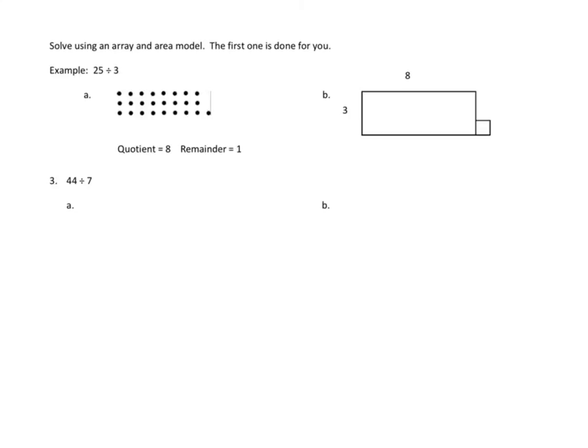In this one, we're going to solve using an array and an area model. So they're doing it this time without graph paper. The first one's done for you. So if we look at our example, when they have 25 divided by 3, they come up with columns of 3 dots, and they figure out how many columns they need to get up to close to 25. And they get to 24 here, and then they have one more. And so that gives them a quotient of 8 and a remainder of 3. They do the same thing here with blocks, 3 units high and 8 units wide, and that 3 times 8 would be 24, but that's 25. So the 25th one is this little extra one off to the side, the remainder.